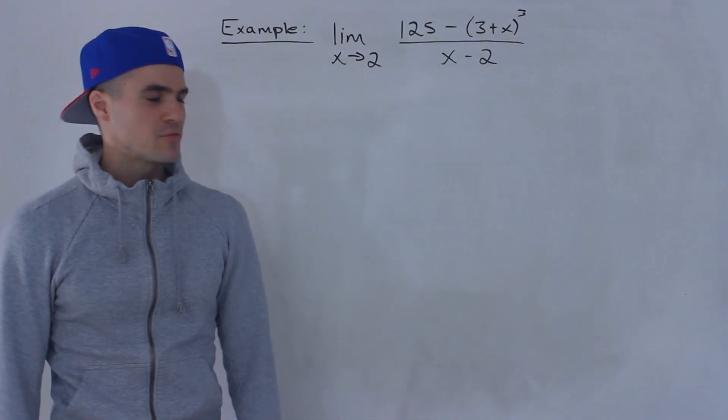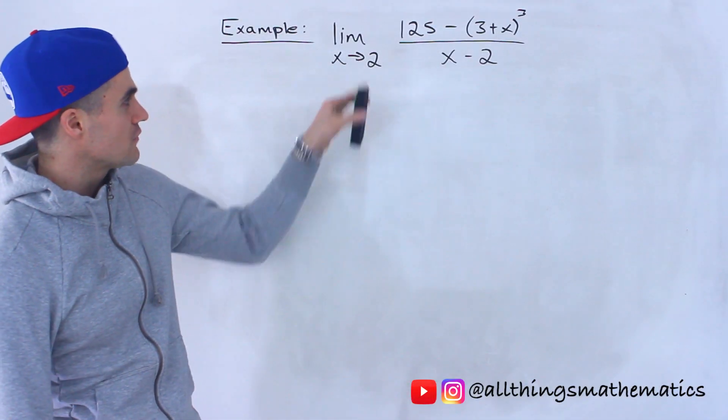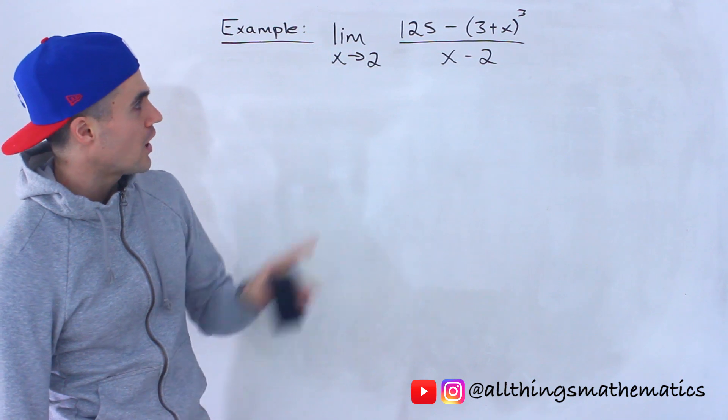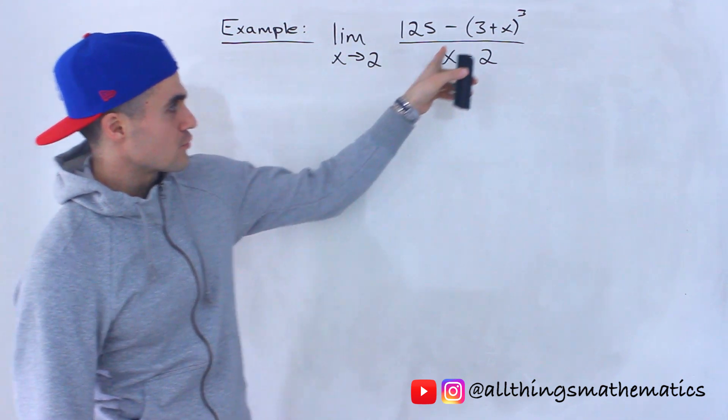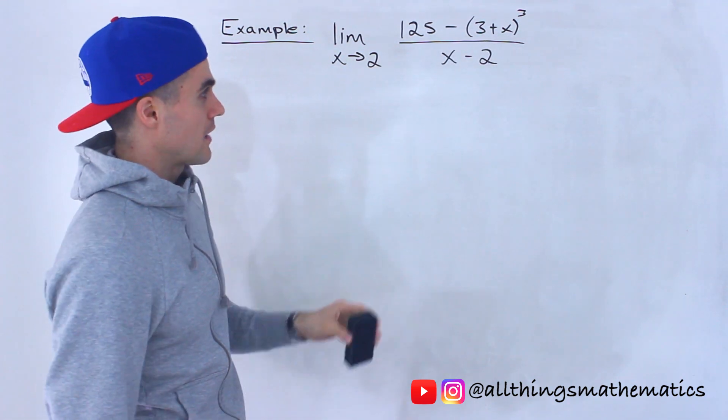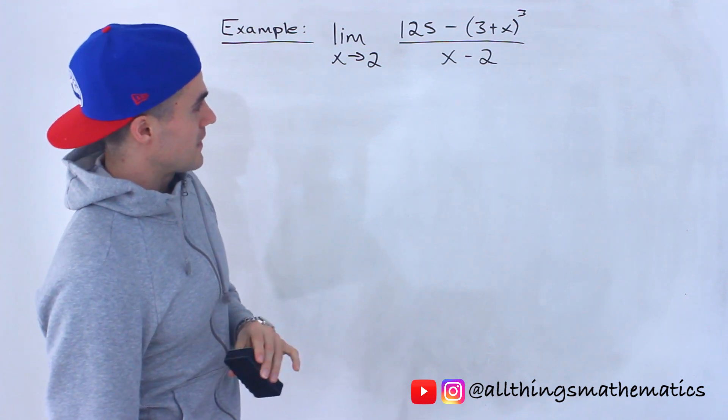What's up everyone? Patrick here. Welcome back. Moving on to the next question. We have to solve this limit here: limit as x approaches 2 of 125 minus (3 plus x) to the power of 3, all over x minus 2.